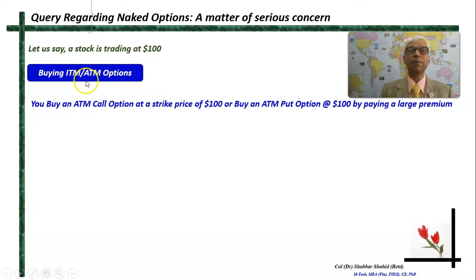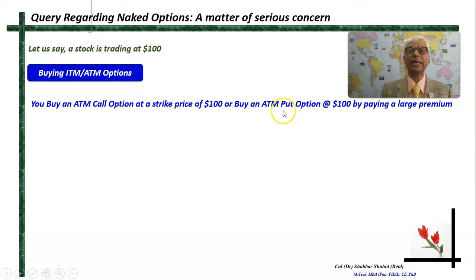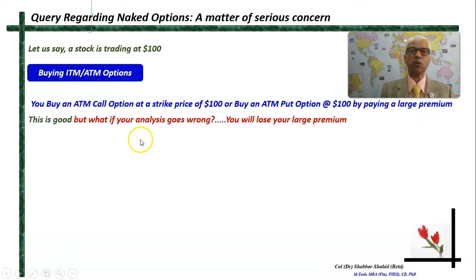Now come to buying in the money or at the money options. If you buy an ATM call option at a strike price of 100, since the stock is trading at 100 it will be ATM. Or if you are buying an ATM put option at the same price, you will have to pay a comparatively large premium. That is a good thing because the intrinsic value of your option is high.